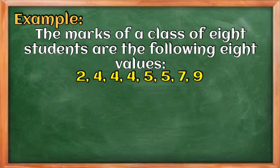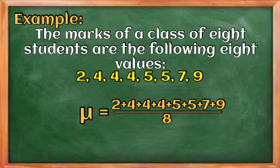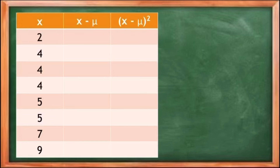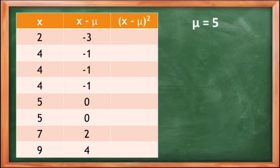Same as with the variance, we first need to find the mean of the given data set. We take the summation of all values divided by 8, which equals 40 ÷ 8 = 5. Therefore, our mean is 5. After finding the mean, we subtract it from each data value: 2 − 5 = −3; 4 − 5 = −1; 4 − 5 = −1, and so on for the rest of the values, completing the second column.